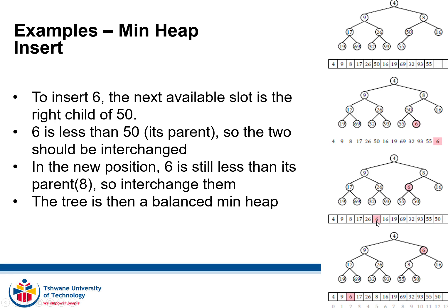Looking at the tree again, the rule is still violated because 8 is greater than 6, and with a min heap the lower values need to be on top. Therefore we swap those two values — 6 takes the position of 8. After that swap, you now have a perfectly balanced min heap. The completeness requirement holds except at the last level, and every level above the last level is complete.